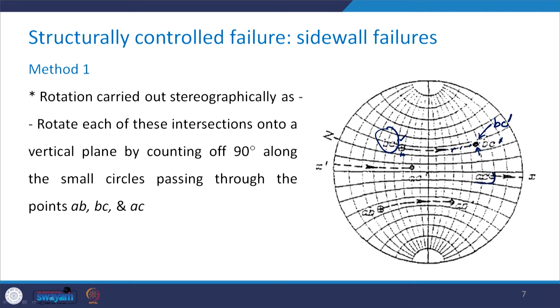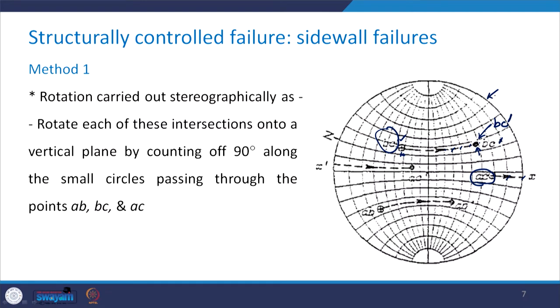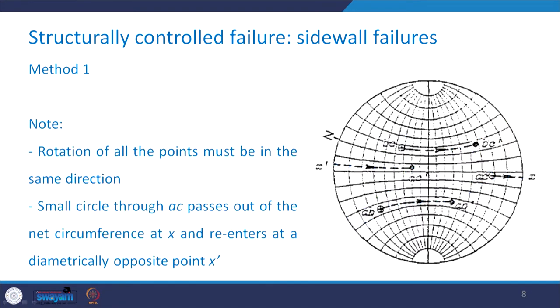For point A,C, only about 20 degrees remain before it exits the stereo net circumference, so it re-enters diagonally and we continue counting 30, 40, 50, 60, 70, 80, 90, giving us A,C prime. Similarly, rotating point A,B by 90 degrees in the same direction gives us A,B prime. All three intersection points A,B / B,C / and A,C have now been rotated.